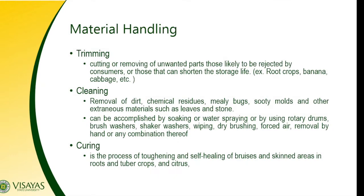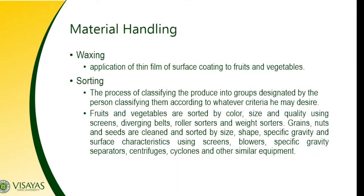The next one is curing. Curing is the process of toughening or self-healing of bruises and skin areas in roots, tubers, and citrus. If a product has been damaged, it undergoes curing so that it heals properly and won't deteriorate during transport. There are also various curing treatments, including chemical treatments, to heal the damage and prevent product deterioration.